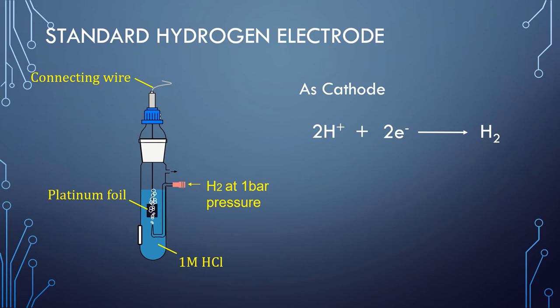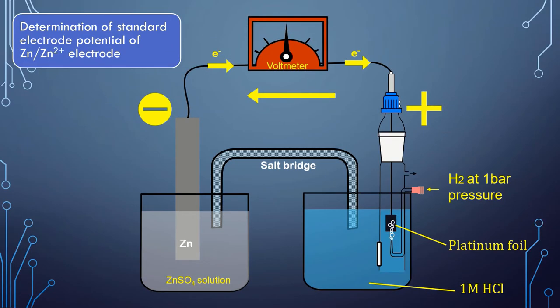Let us see how the standard electrode potential of the zinc electrode is determined. The zinc electrode, immersed in a one molar solution of zinc sulfate, is connected to the Standard Hydrogen Electrode as shown in the setup. The EMF of the cell comes out to be 0.76 volts, which is the standard electrode potential of zinc.